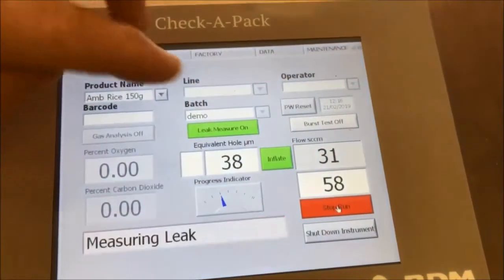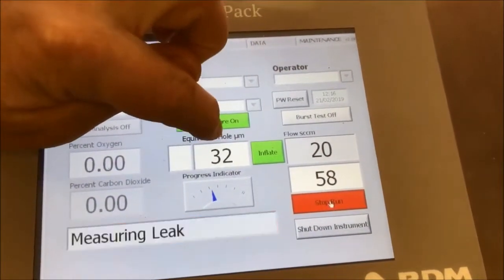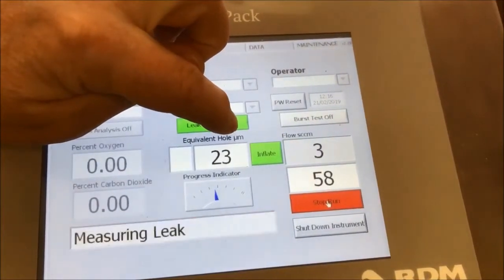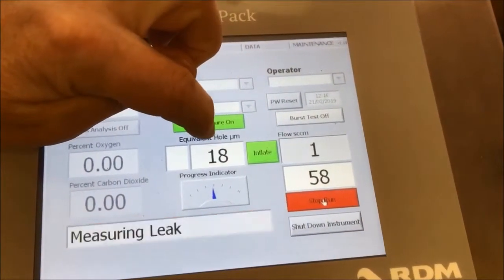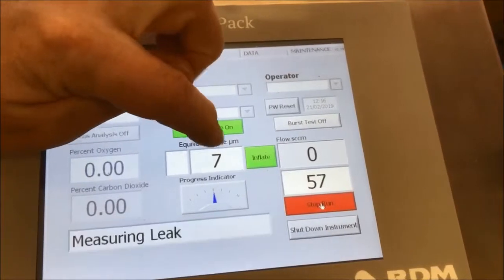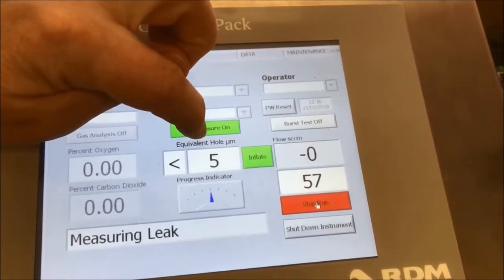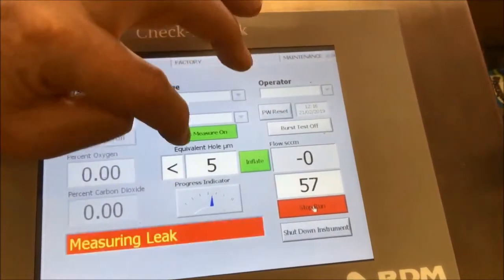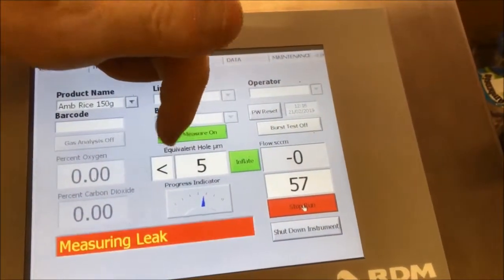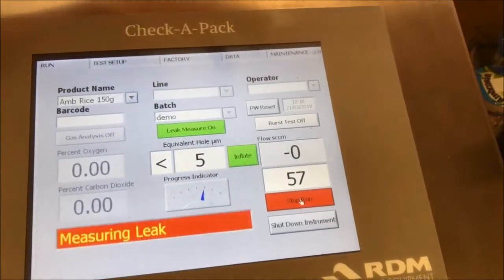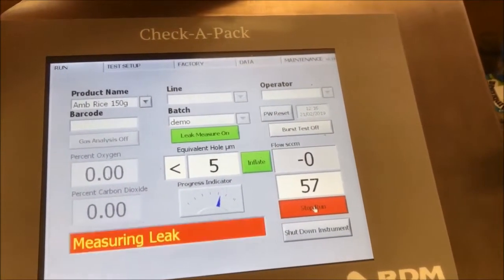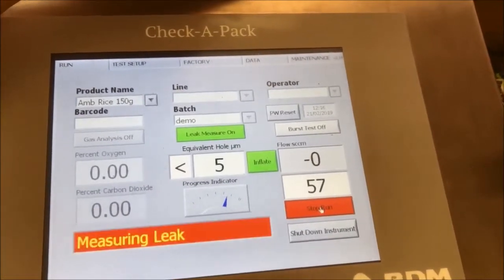Various numbers on here, but really the most important number is this number here. This is the equivalent hole size in microns. This is telling me that this pack—it will tell me in a minute once it's settled down—what the hole size is for that pack. I can see straight away that it's below five microns, so that's really below the level of detection. It's a very, very small hole size.